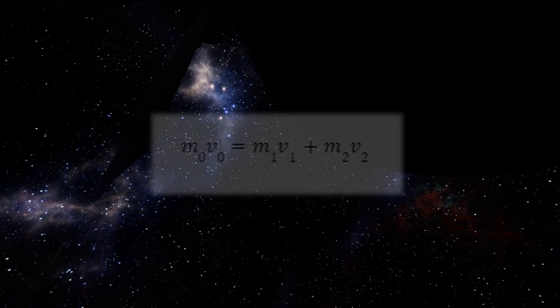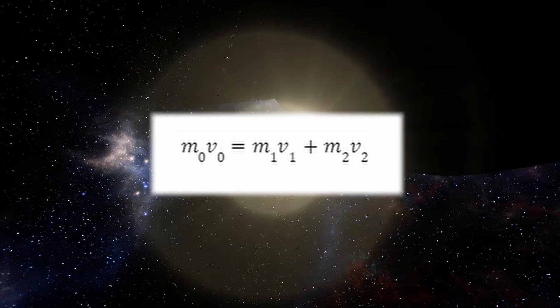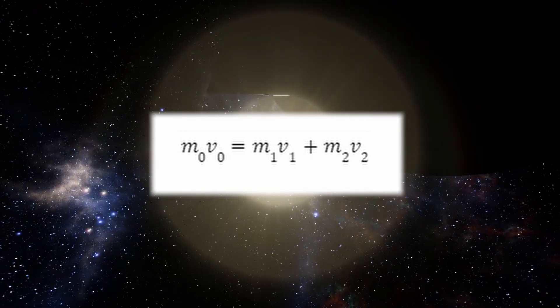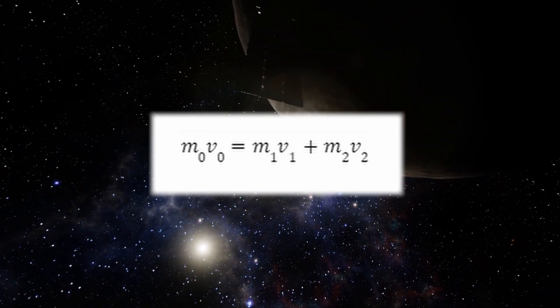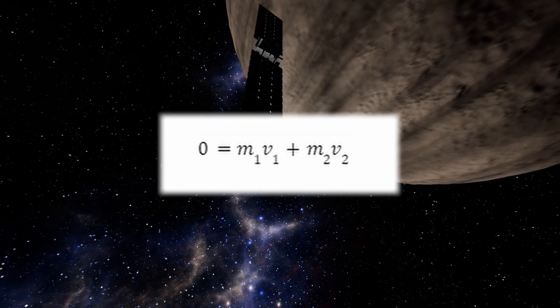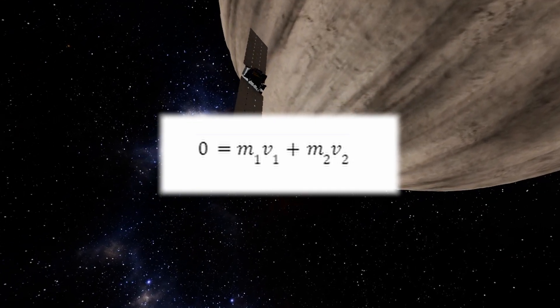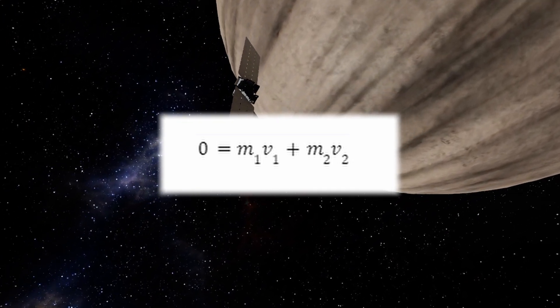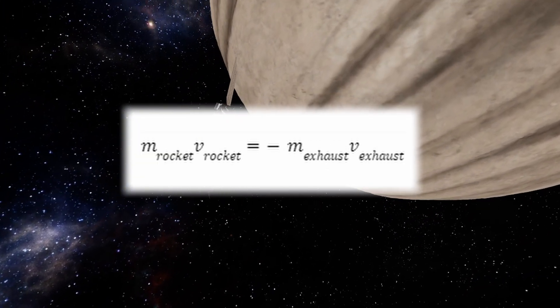All rocket engines, whether ion engines or chemical rockets, work on the conservation of momentum. The initial mass of a rocket and its fuel times the initial velocity is equal to the final mass of the rocket times the velocity, plus the final mass of the spent fuel times the exhaust velocity. If our rocket is not initially moving, the initial velocity is zero, so the entire left-hand side becomes zero. We can then set the final velocity times the mass of our rocket equal to the velocity and mass of our exhaust.